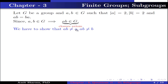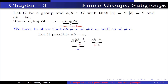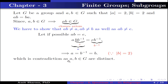We need to show that ab ≠ a, ab ≠ b, and ab ≠ identity. Suppose ab = identity; multiplying b inverse on both sides gives a·b·b⁻¹ = e·b⁻¹, so a = b⁻¹ = b. Since the order of b is 2, b⁻¹ = b, which is a contradiction because a and b are distinct elements of G.